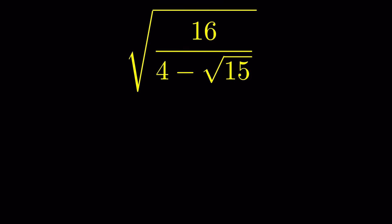So we have 16 upon 4 minus square root of 15, times 4 plus square root of 15 upon 4 plus square root of 15. By multiplying and dividing by the same number, we don't change the question. This gives us 16 times 4 plus square root of 15, upon 4 minus square root of 15 times 4 plus square root of 15, under square root. If we consider a as 4 and b as square root of 15, then the denominator is in the form of a minus b times a plus b, which is the difference of squares.